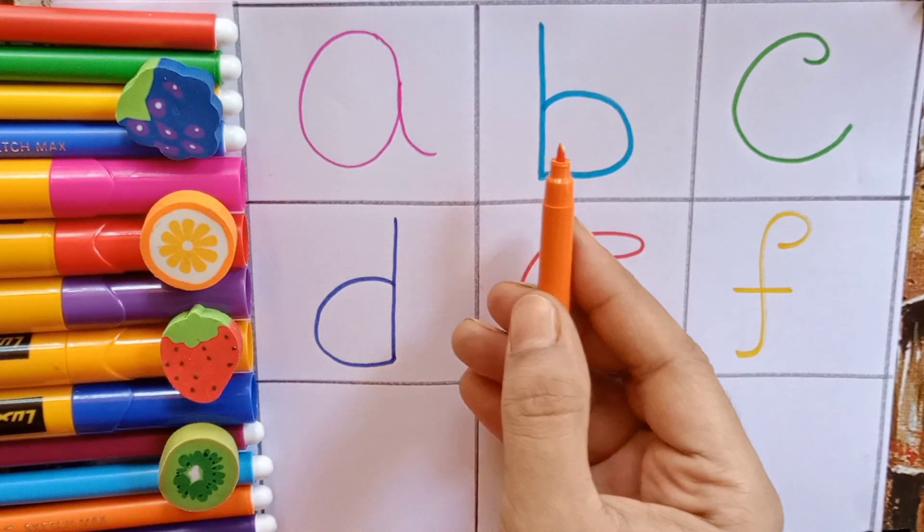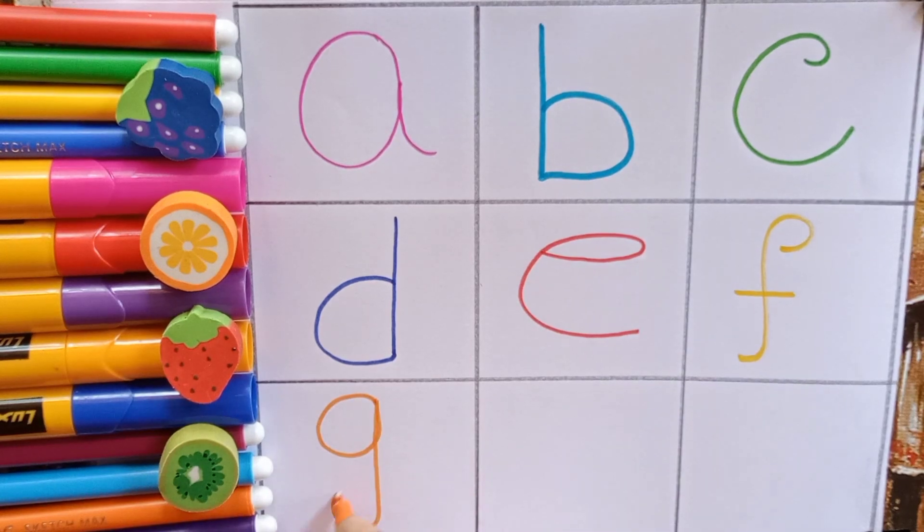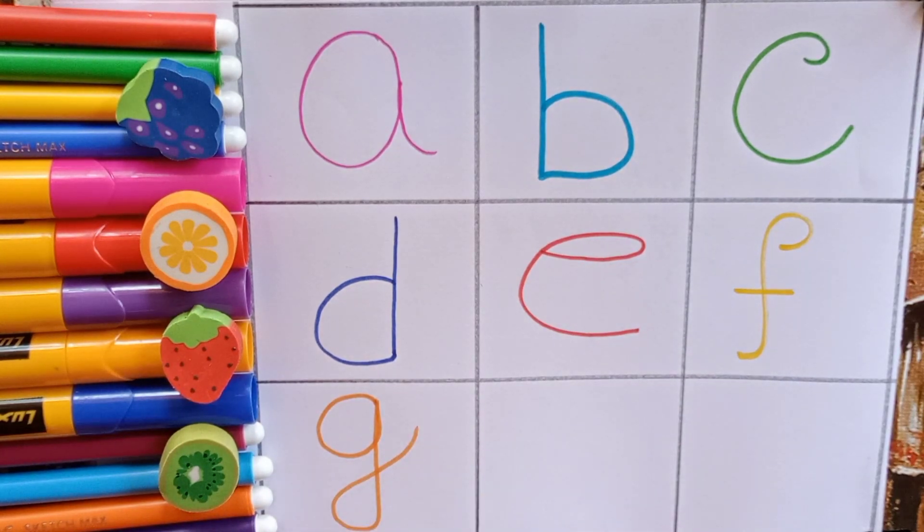Orange. G. G for grapes. G for also gate.